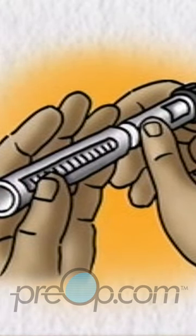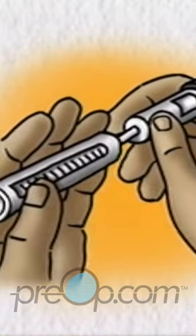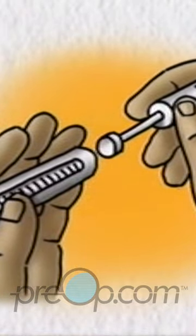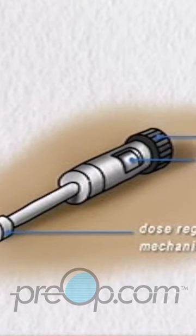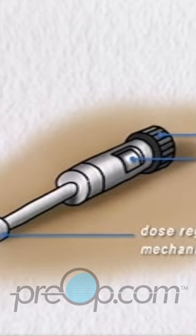Follow the manufacturer's instructions to remove the cap. Separate the base from the cartridge holder by unscrewing it. Rewind the base dose regulating mechanism back to zero and put down the base.